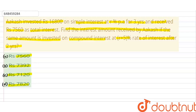So, first of all, we have been given Rs. 16,800 as principal, Rs. 800 interest, and 8% rate for 3 years. So simple interest — how much is 7,560? Let's apply the simple interest formula. SI is equal to P into R into T divided by 100.